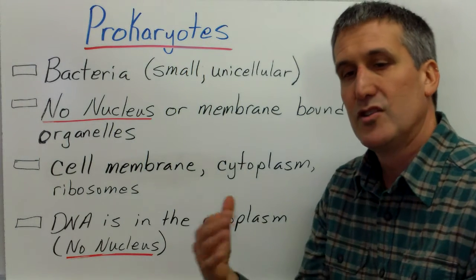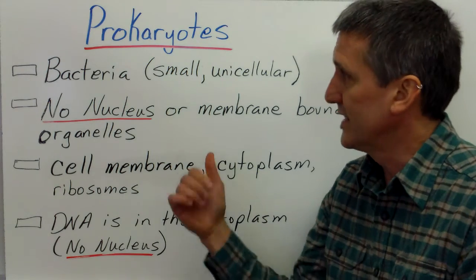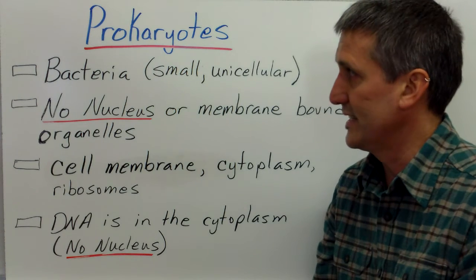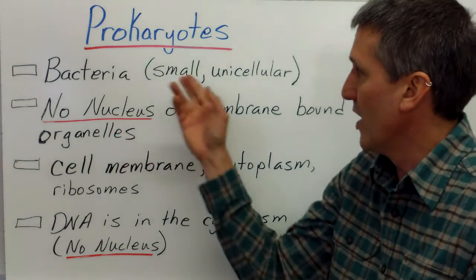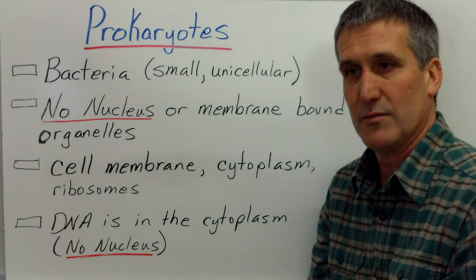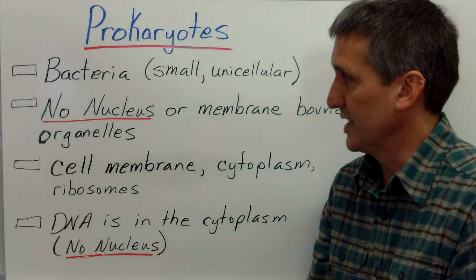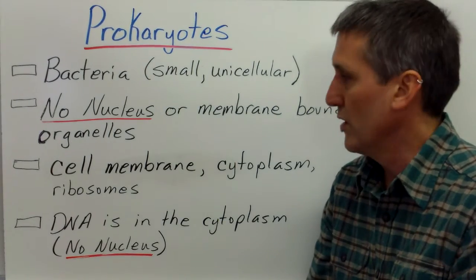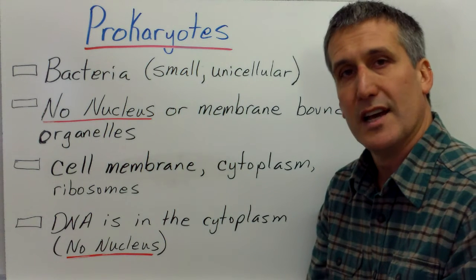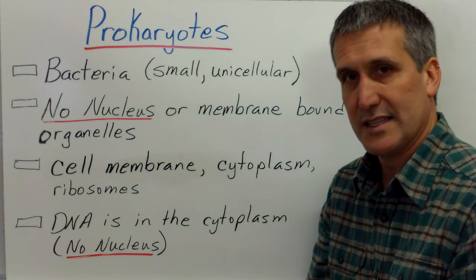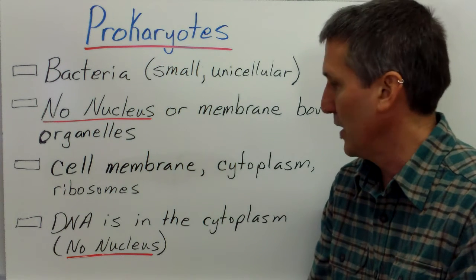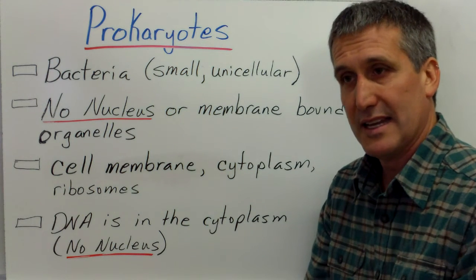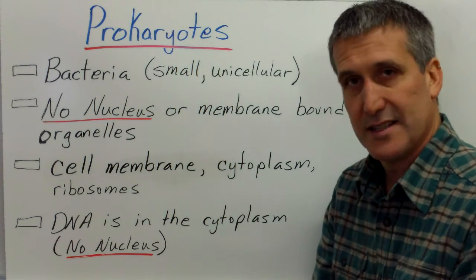Cells are divided into two main groups: prokaryotes and eukaryotes. Let's take a quick look at prokaryotes first, because they were the first to exist and evolve in the biosphere. They are smaller and unicellular, and the two bacteria kingdoms are the only kingdoms composed of these prokaryotic cells. There is no nucleus or other membrane-bound organelles, so they are smaller and less complex. They do have a cell membrane, cytoplasm, and ribosomes for protein synthesis, but everything happens in that smaller, less complex cell. DNA is not contained in a nucleus in a prokaryotic cell — it is in the cytoplasm.